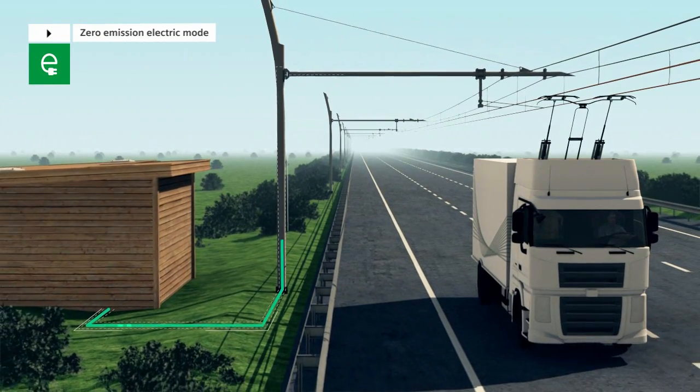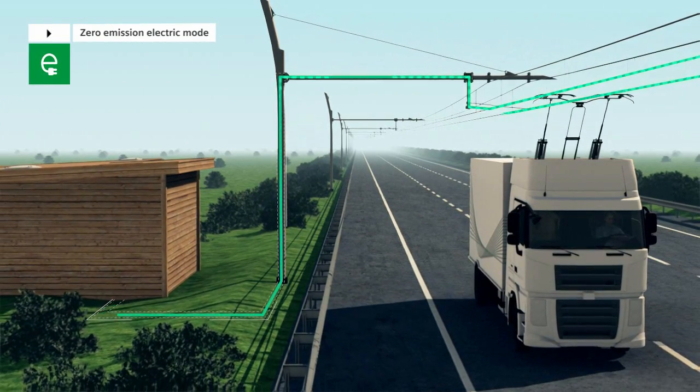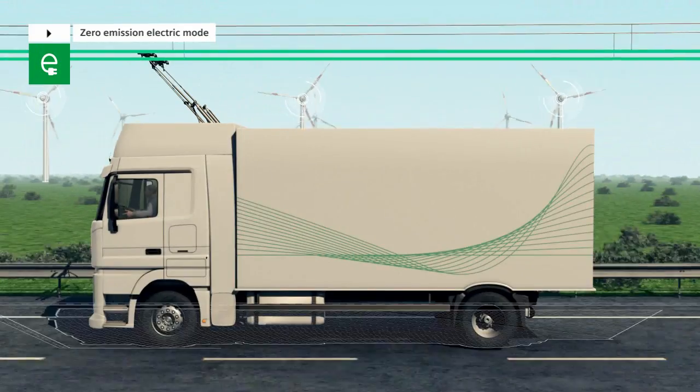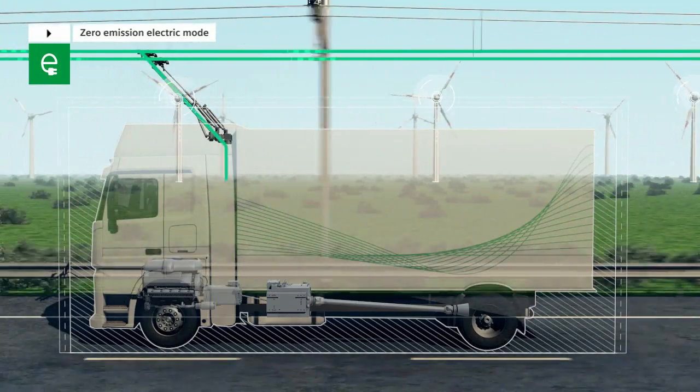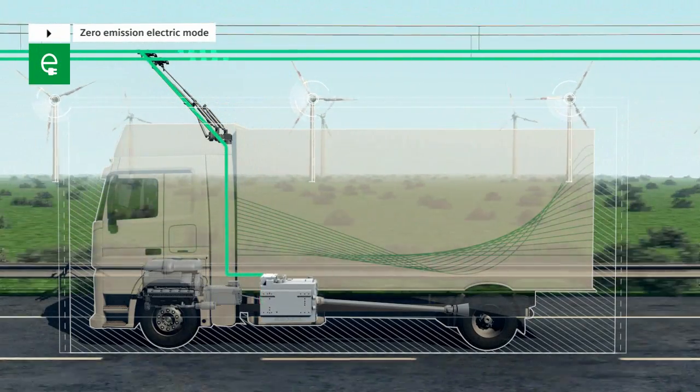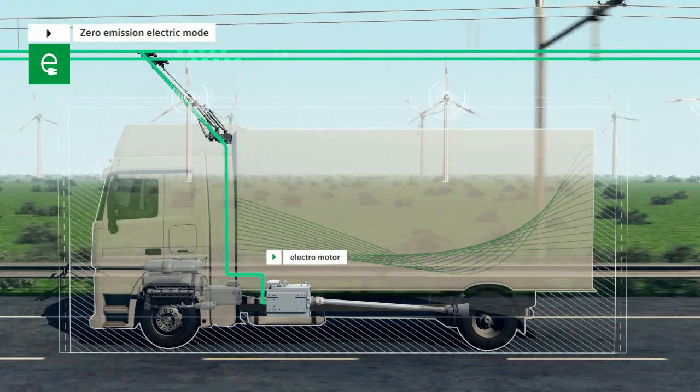The contact line is continuously provided with electric energy by the substation. The pantographs transfer this energy directly to the electric engine of the E-Highway truck, powering the drive shaft.